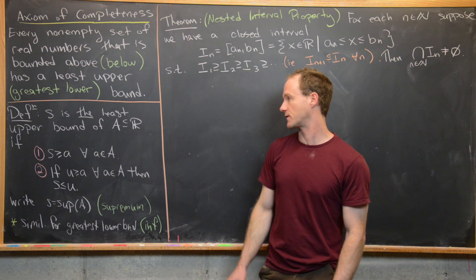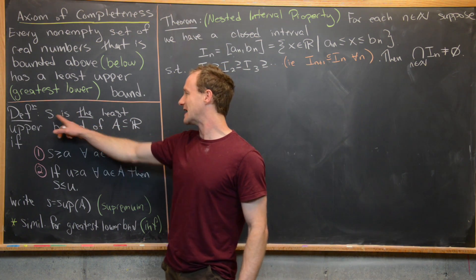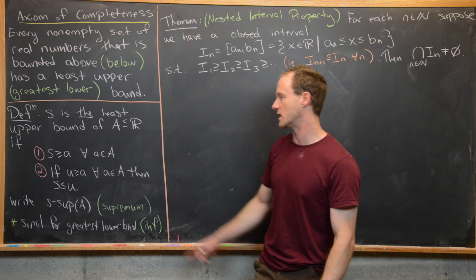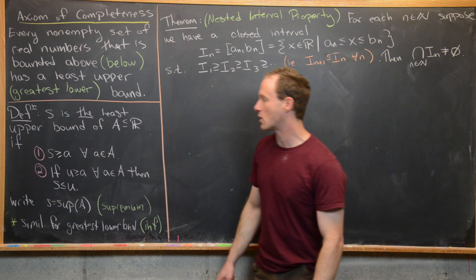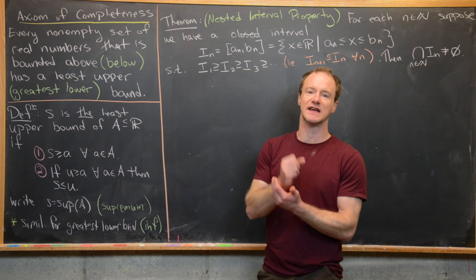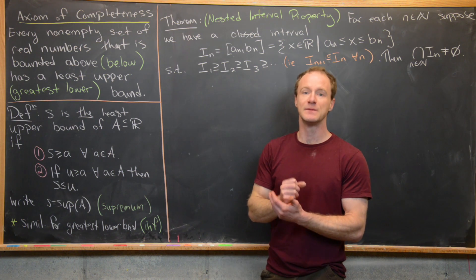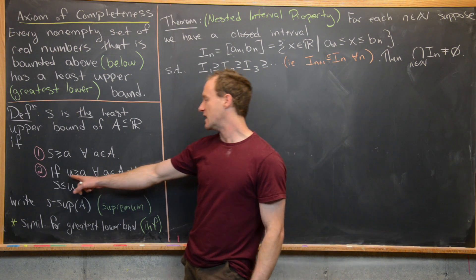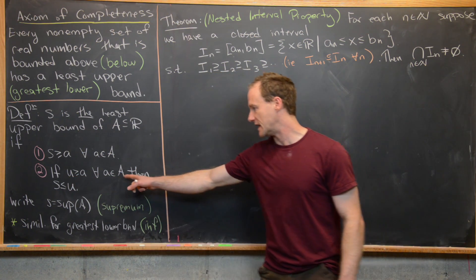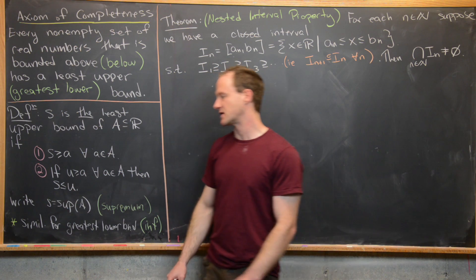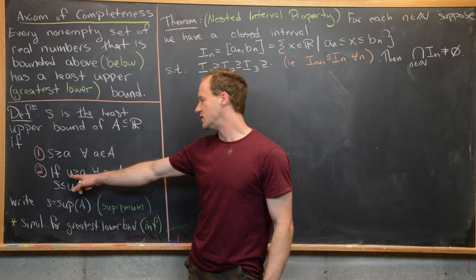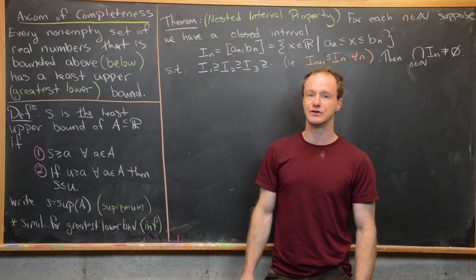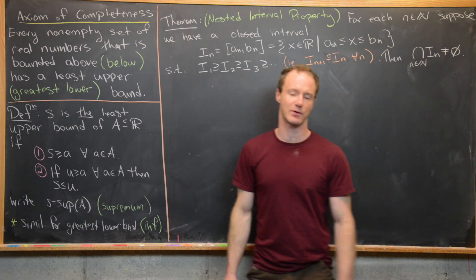Let's recall what those notions are. We say that S is the least upper bound of a set A of real numbers if it satisfies two criteria. First, S is bigger than or equal to A for all A in A — in other words, it's an upper bound of A. And then if U is also an upper bound for A, then S is less than or equal to U, making S the least upper bound.